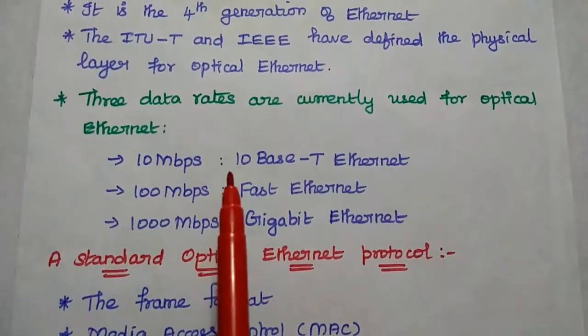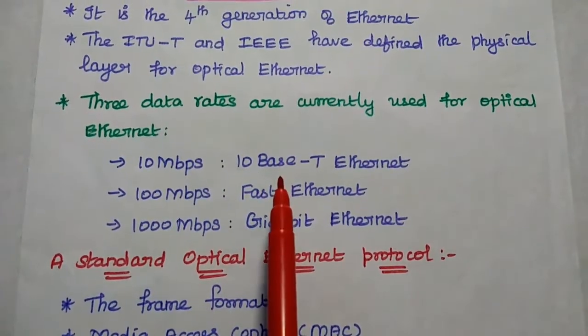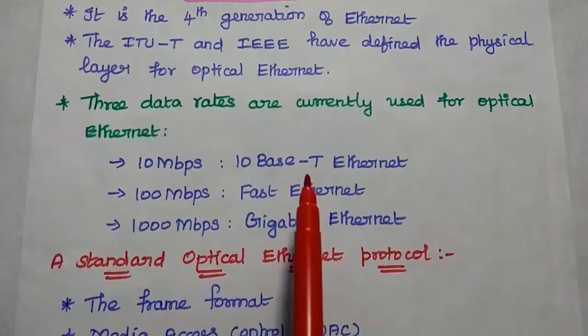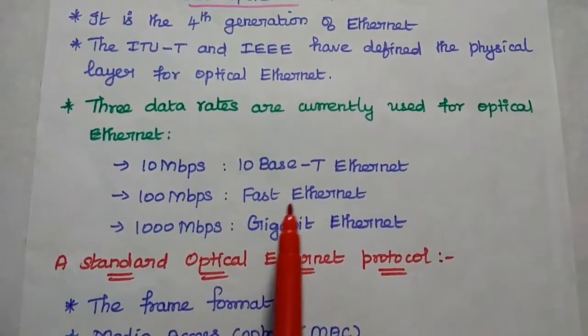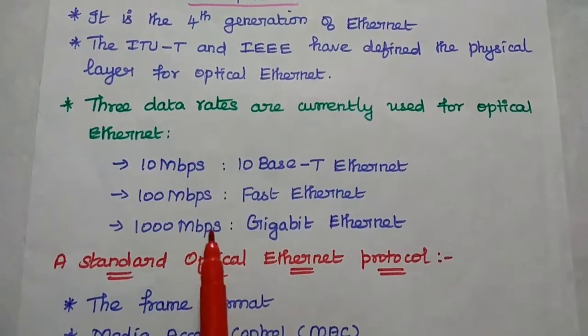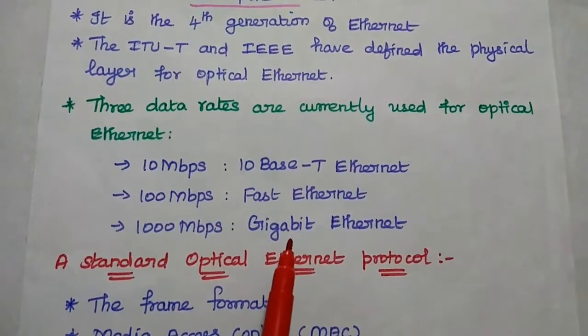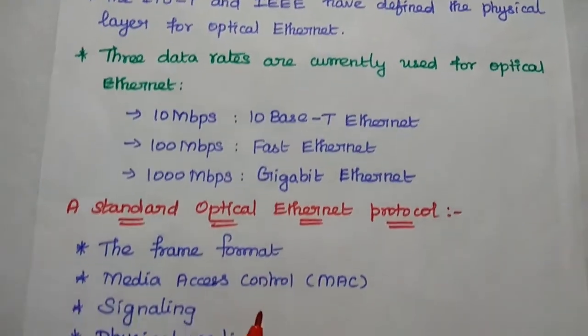10 Mbps, this is the lowest data rate for this Optical Ethernet. 100 Mbps, that is the fast Ethernet. 1000 Mbps, that is Gigabit Ethernet.